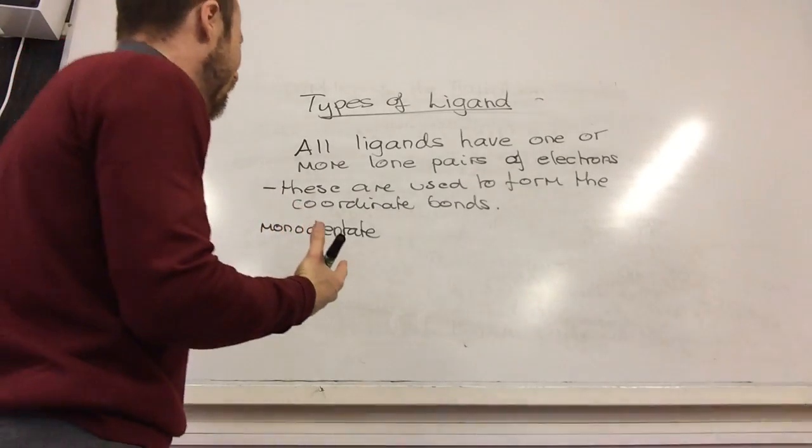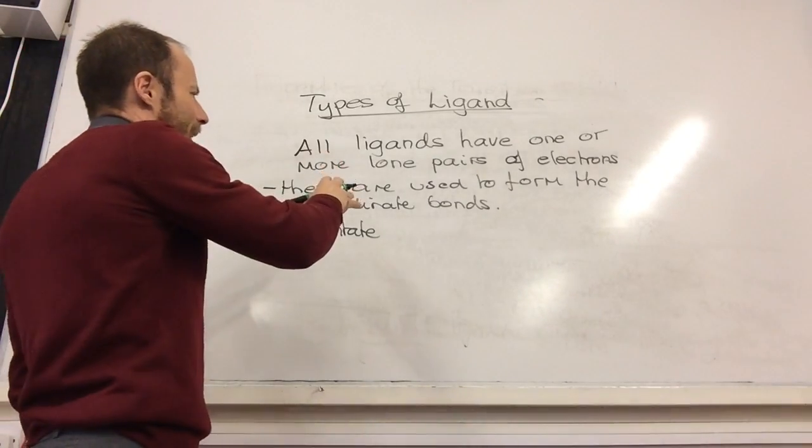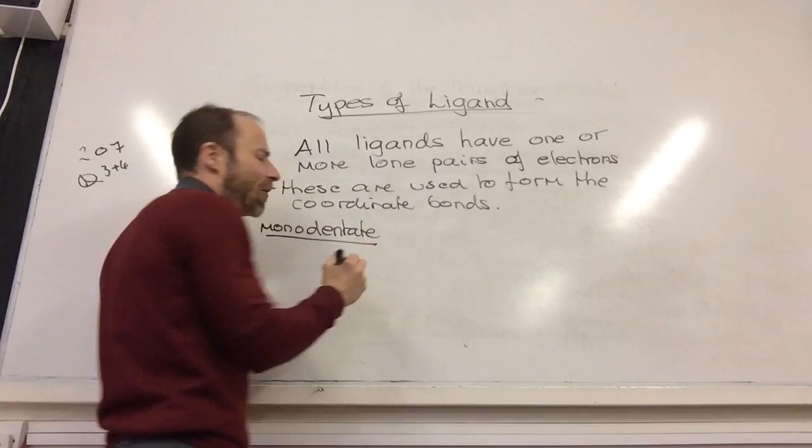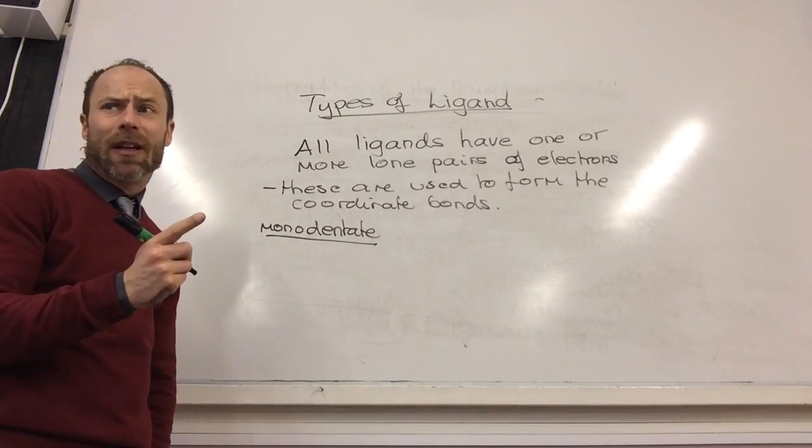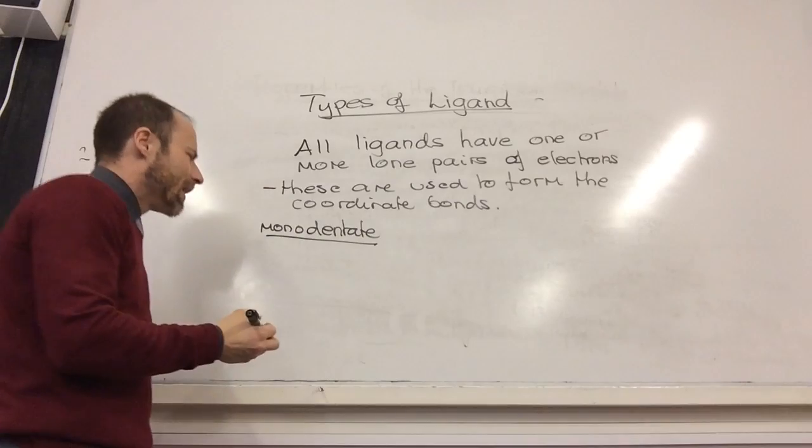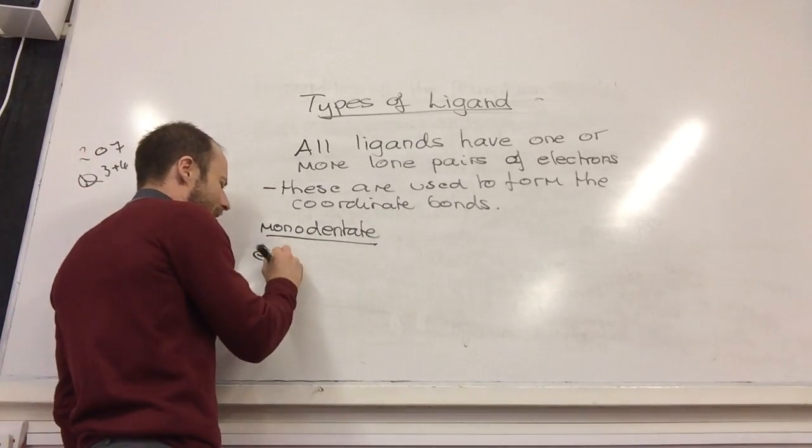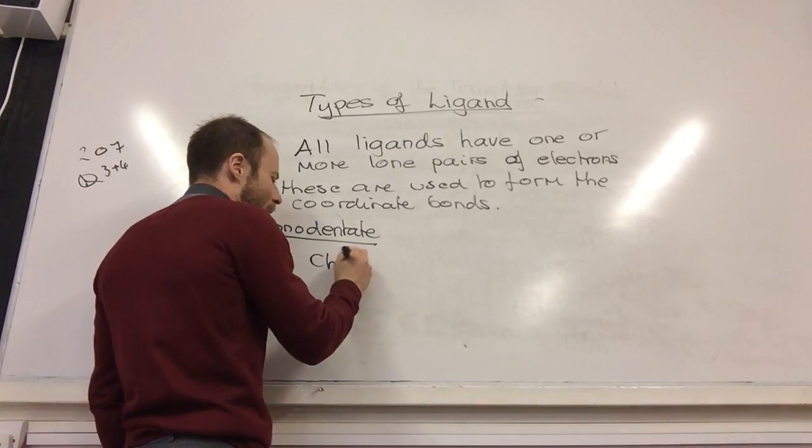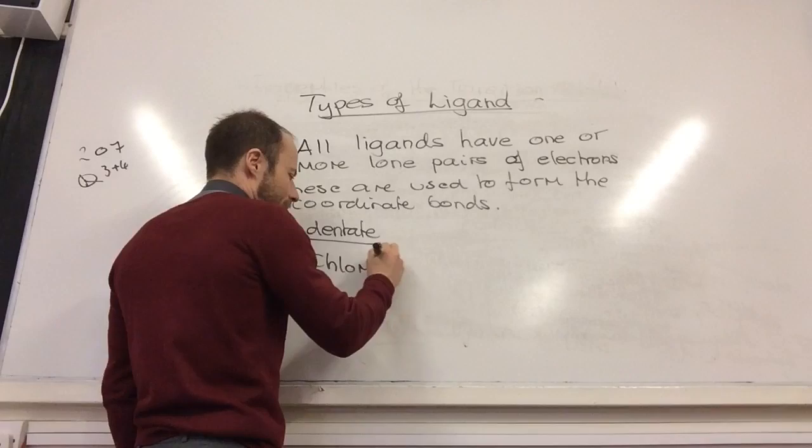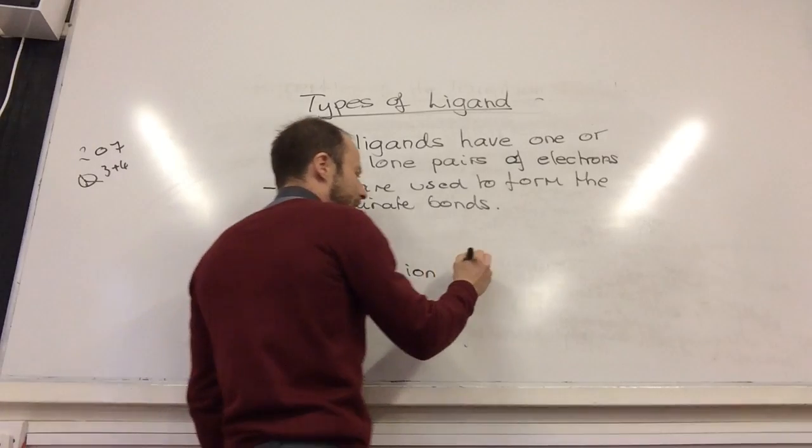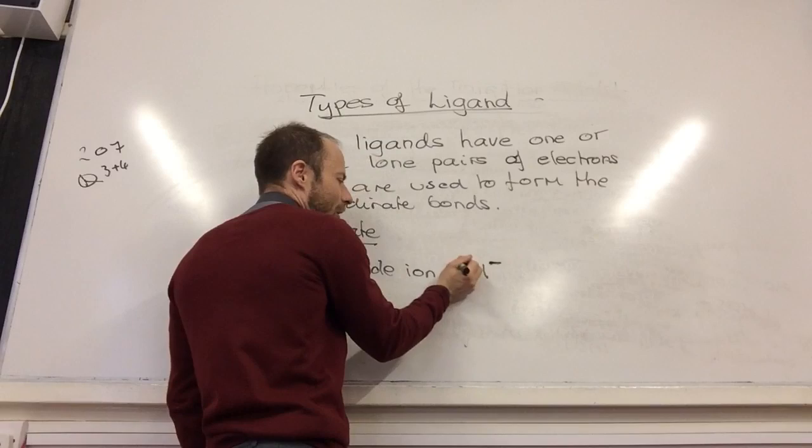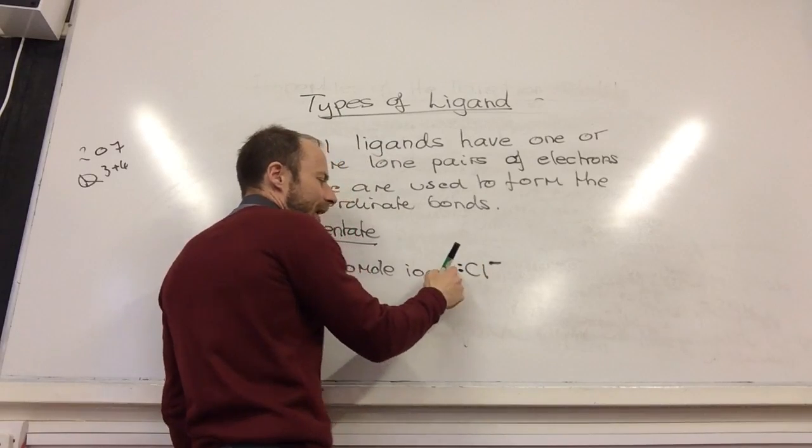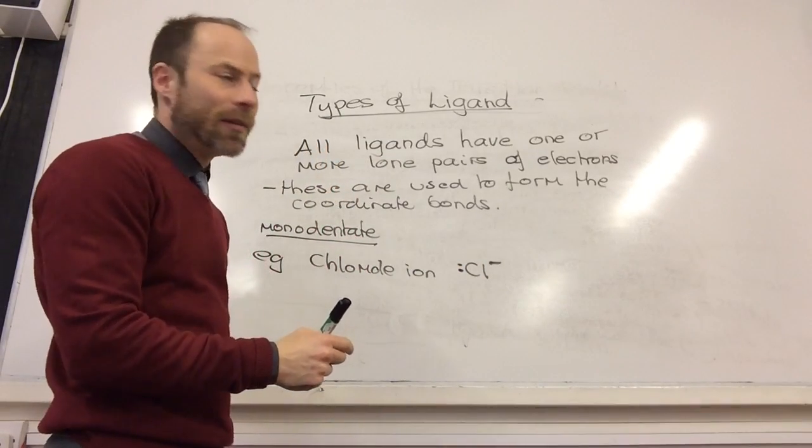The simplest ones - they've all got to have lone pairs on them. Monodentate ligands have one lone pair on them that they can use to form a dative covalent bond or coordinate bond. For example, a simple one would be the chloride ion. The chloride ion, Cl⁻, obviously has got a lone pair that it could form a dative covalent bond with.